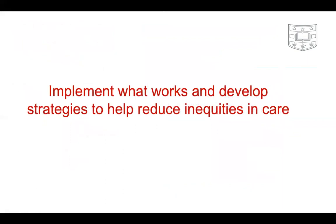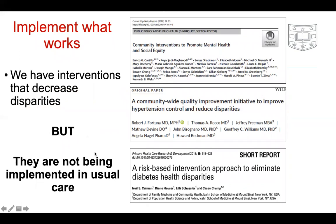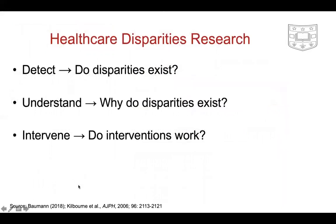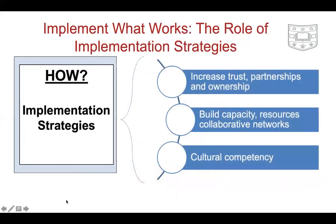Once you have interventions, implement what works and develop strategies to help reduce inequities in care. We have interventions that have shown to work and decrease disparities, but they are not being implemented in usual care. The field of healthcare disparities research has been successful in detecting whether disparities exist, understanding why they exist, and intervening. Implementation science could benefit from that work, and vice versa, disparities research could benefit from implementation science's thinking about multiple levels and how to eliminate inequities.